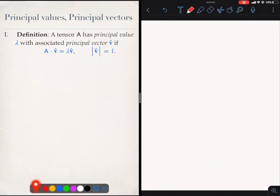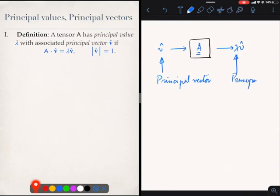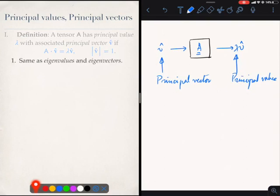A tensor A has a principal value lambda with associated principal vector V if A times V equals lambda times V. I have a tensor A which is a black box, and some vector V enters A and comes out only simply scaled. Then this is my principal vector associated with this principal value. The idea is the same as that of eigenvalues and eigenvectors. In dynamics we tend to use principal values and principal vectors, so I'm simply using that terminology.